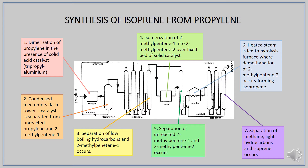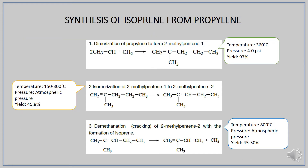Isoprene is recovered from the mixture through a series of distillation columns. Here are the three chemical equations with their respective temperature, pressure, and yield. It can be seen that a moderate yield of 45–50% of isoprene can be obtained from this particular process.